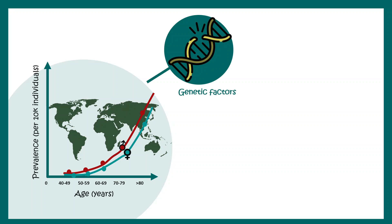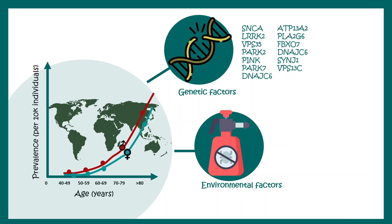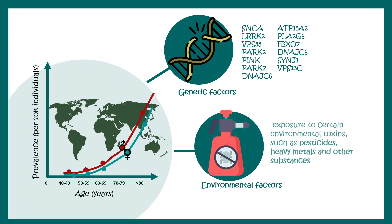There are genetic factors and environmental factors associated with disease progression. Genetic factors include mutations described in at least 20 different genes, which are associated with various cellular processes. Environmental risk factors include pesticides and heavy metal toxicity.